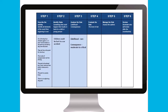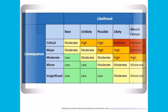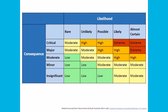Step four involves evaluating the level of risk, which will be dependent on the answers you gave in step three. To assist you, you can utilize a risk analysis matrix. Continuing with the example of children being hurt in a car accident — the likelihood was rare and the consequence was moderate to critical. Therefore, using the risk matrix, the risk level is low to moderate. You should continue to use this process for all identified risks.